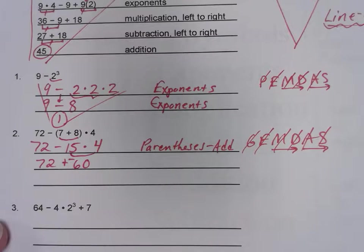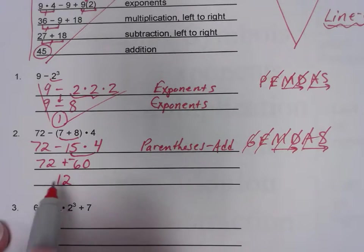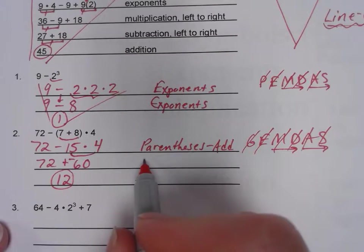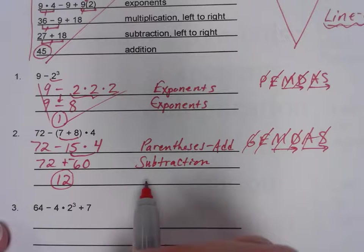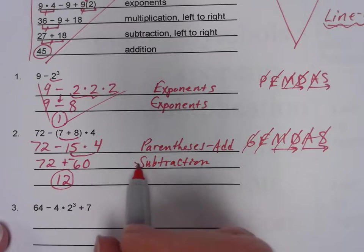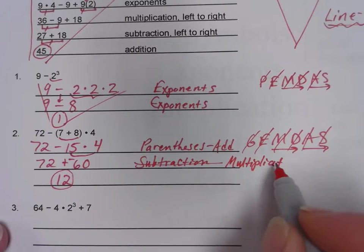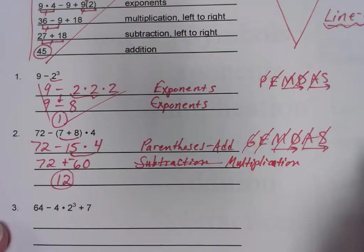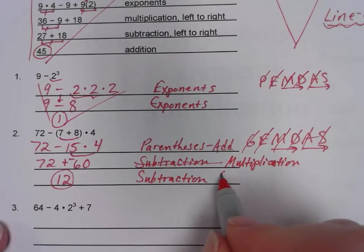72 take away 60 — or 72 minus 60, or plus a negative 60 — gives me 12. Would that be positive or negative? Who's farther from zero — the positives or the negatives? The positives. So 12 is our answer. The rule we used was multiplication in the previous step, and the last thing we did was subtraction — or, because we're familiar with integer rules, we might say different signs: subtract.